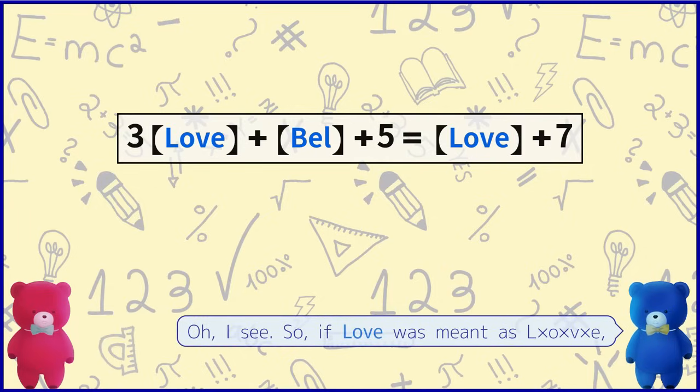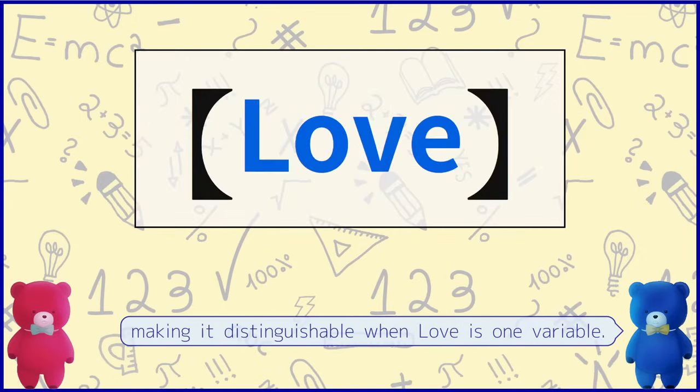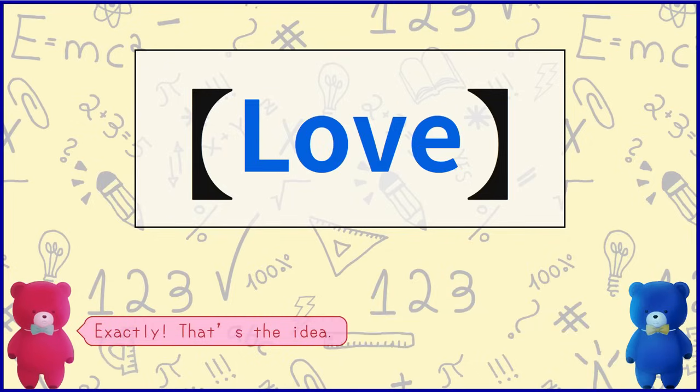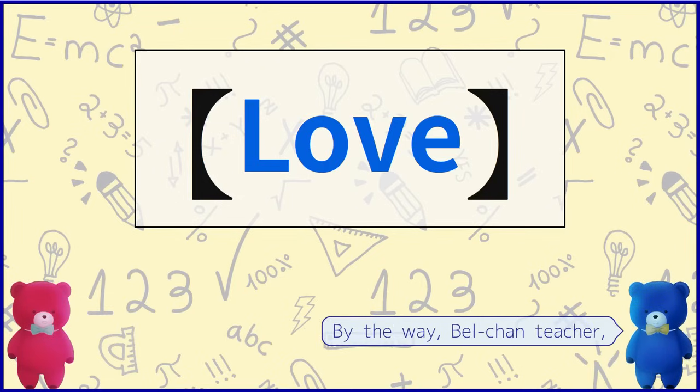So if 'love' was meant for L times O times V times E, it would look like this, making it distinguishable when 'love' is one variable. Exactly, that's the idea.